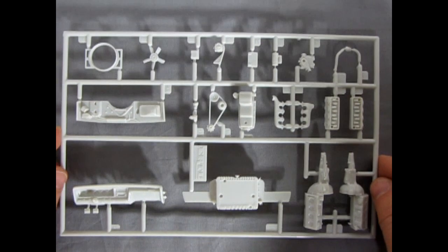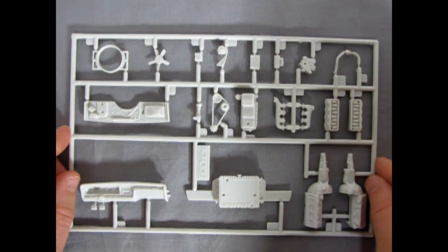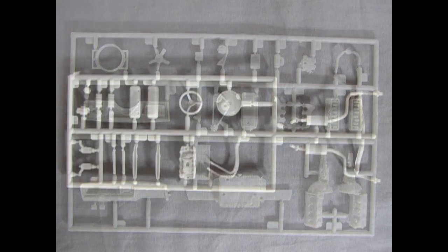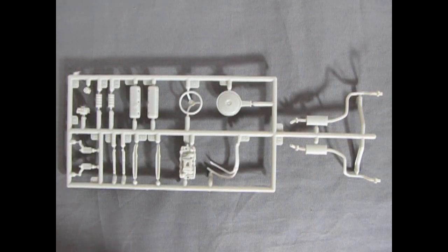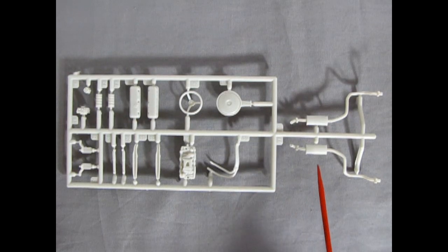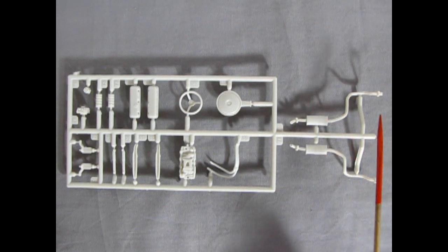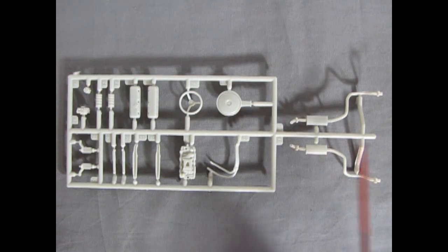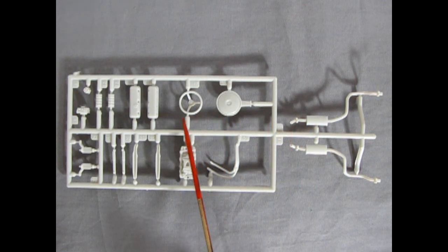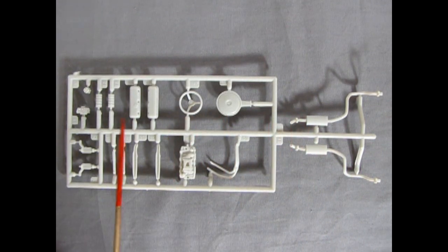So again, more nice detail from this era of AMT. And our next parts tree has a mixture of different components to it. You have the rear exhaust pipes here with, of course, little brackets on there. Your air cleaner, your steering wheel, the valve covers.